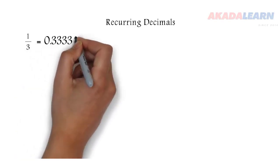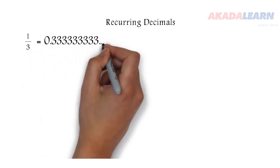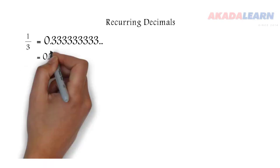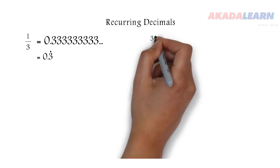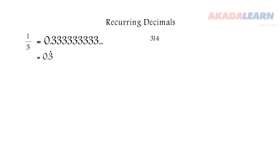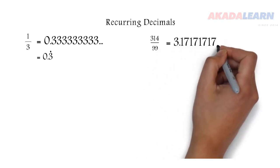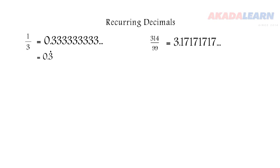Recurring decimals. So we say 1 divided by 3, which is 0.333333, it continues infinitely. Now we can write that in a short way. We just say 0.3 with a dot on top of the 3, meaning 3 is repeated. Now 314 divided by 99, it's 3.171717, so 17 is repeated. There is a short way we can write that. We say 3.17 with a dot on 1 and 7.